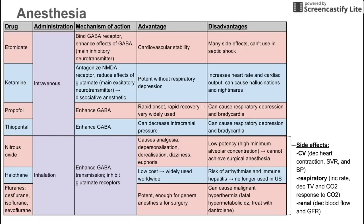The next inhalation anesthetics are the fluranes. There are three drugs in this category: desflurane, isoflurane, and sevoflurane. They share the same mechanism of action and are stronger than nitrous oxide — strong enough for surgery. The downside is that they can cause malignant hyperthermia, a fatal hypermetabolic condition where body temperature rises uncontrollably and can cause death. Malignant hyperthermia can be treated with dantrolene.